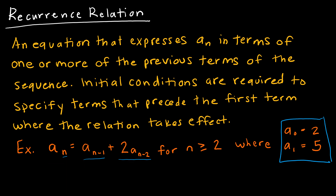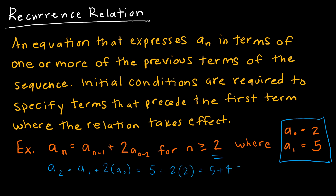So I know that a sub zero is two and a sub one is five. If I want to find a sub two, this is going to be a sub one plus two times a sub zero. A sub one is five, and two times a sub zero, which is two, gives me five plus four, which is nine.